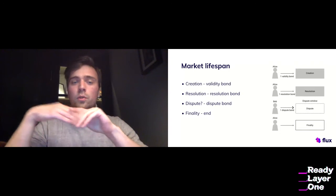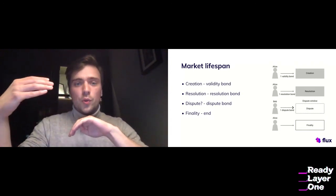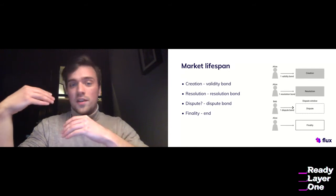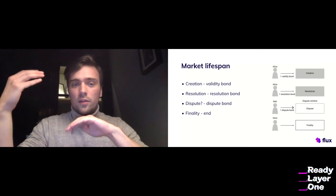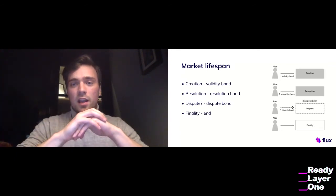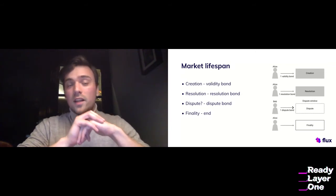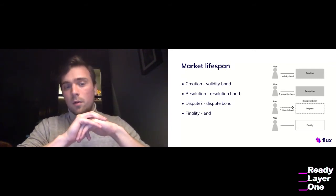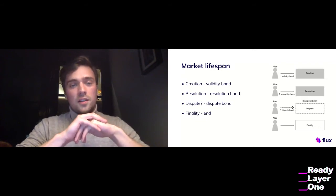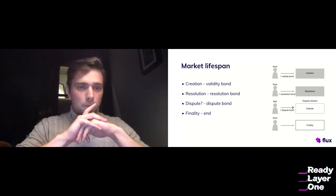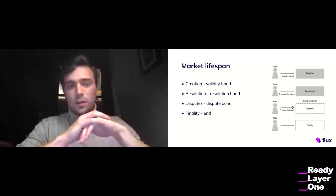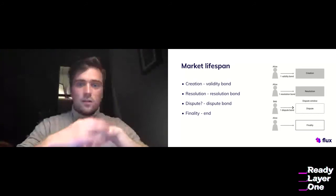Then there's a resolution bond. The person that provides the initial resolution to a market outcome also has to stake a little bit of money on which outcome they think is right. This way they also have an incentive to tell the truth. If this person didn't tell the truth, or somebody disagrees with the outcome, somebody has the opportunity within a dispute window to post a dispute bond — which is right now double the resolution bond. If there's no dispute, the market gets finalized and reaches the state of finality.